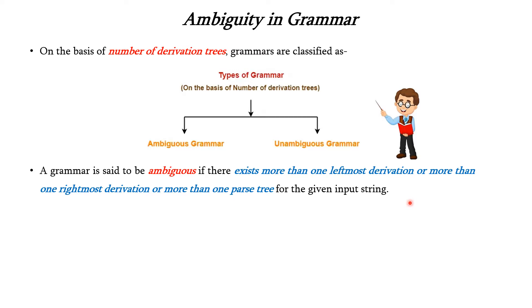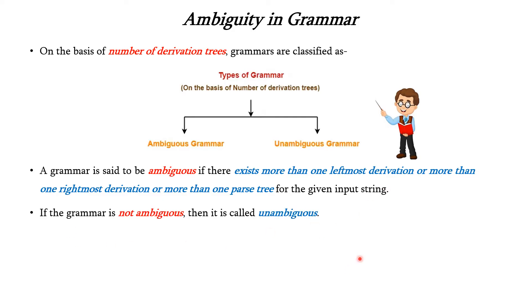We already know the concept of leftmost derivation, rightmost derivation, and parse tree from our previous lecture. If the grammar is not ambiguous, then it is called unambiguous. That is, if none of these three criteria exist, then it is called an unambiguous grammar.